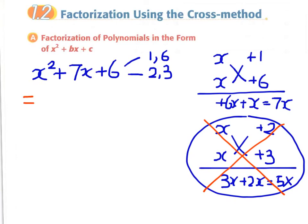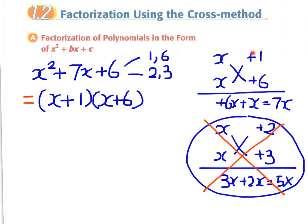The answer is x plus 1 times x plus 6. Since this method involves crossover multiplication and summation, we call this the Cross method.